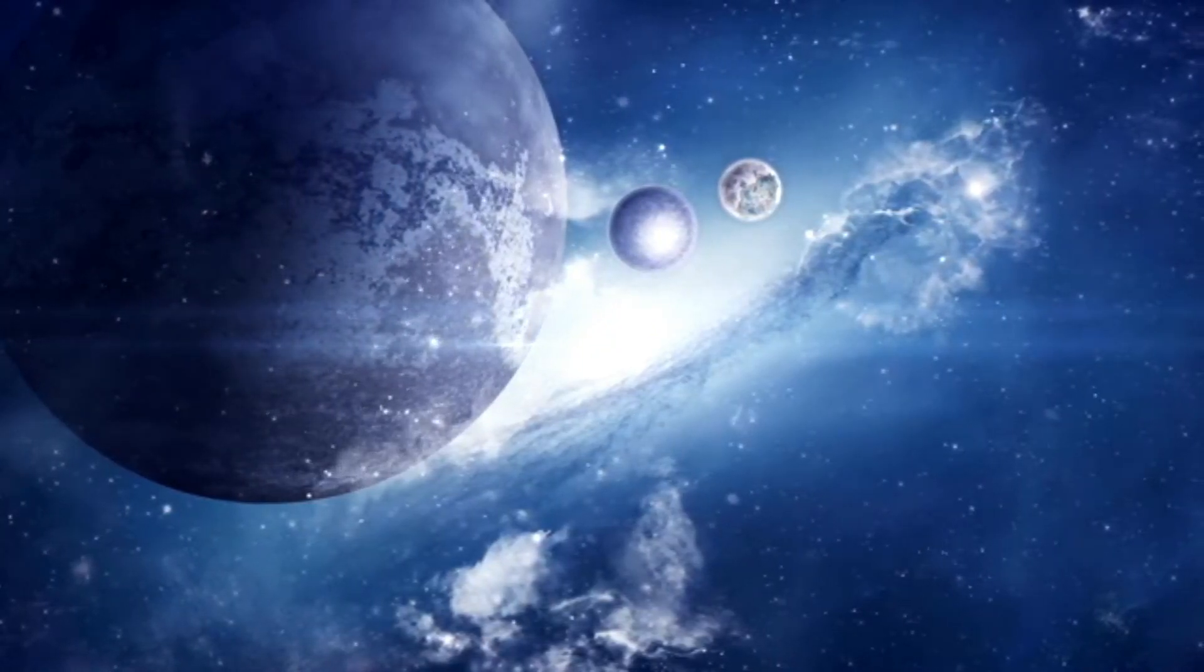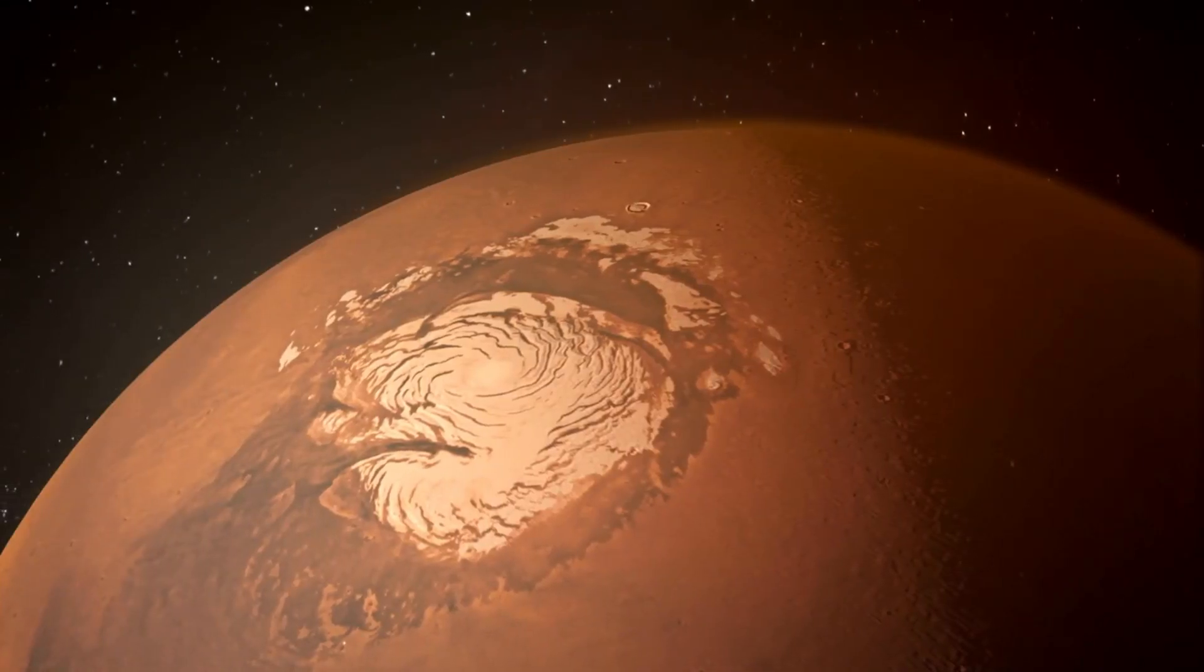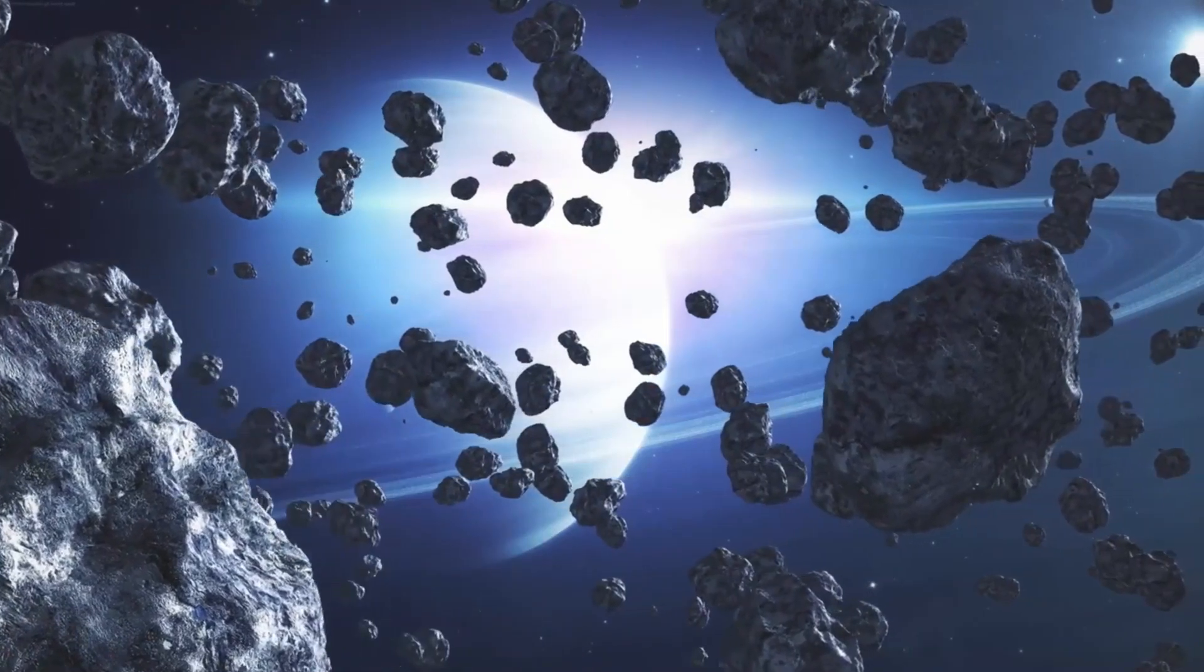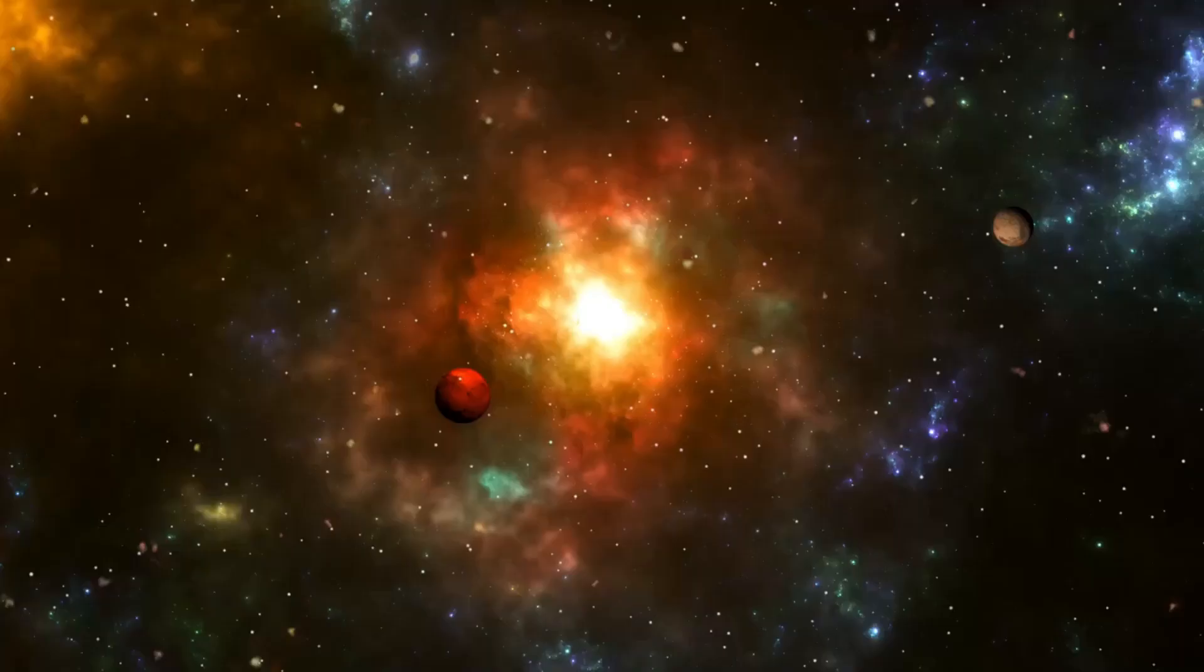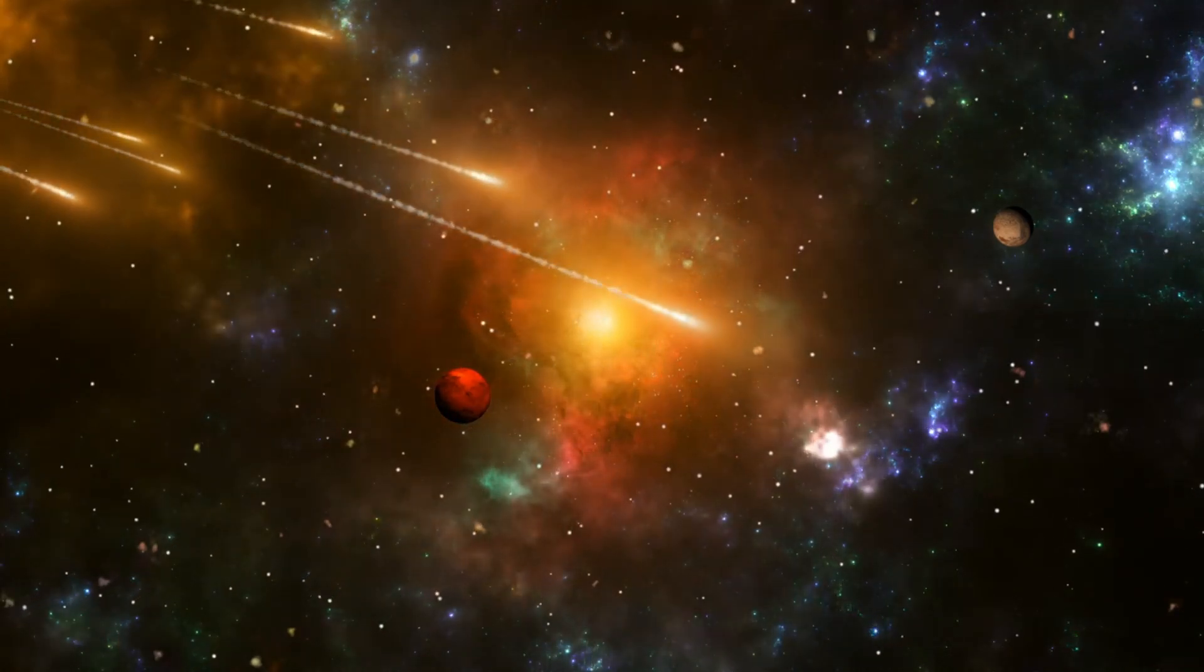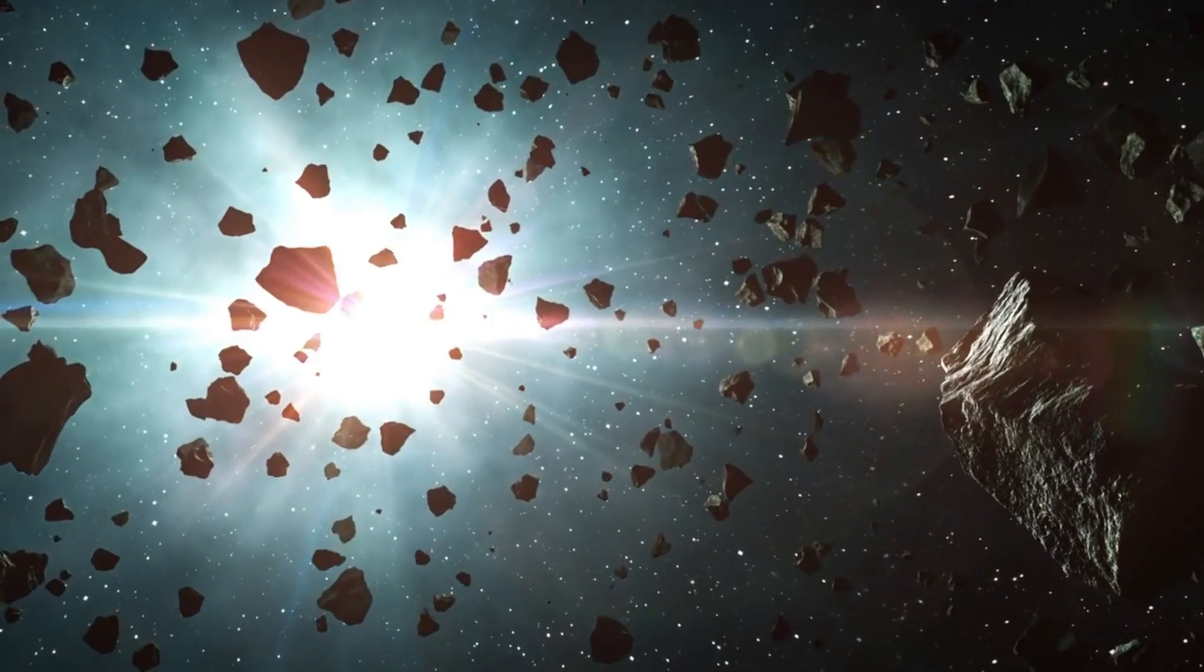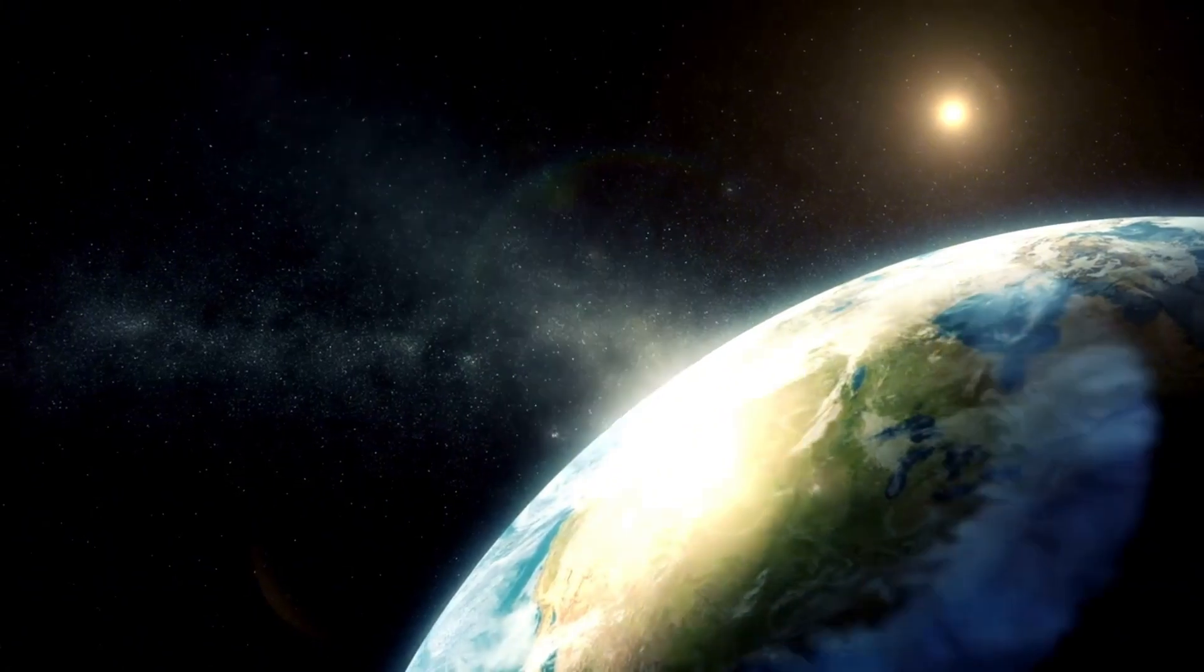The New Horizons mission, which flew by Pluto in July 2015, gave unprecedented data about this distant world. The surface of Pluto is characterized by enormous plains, transcending mountains, and profound valleys. One of the most eminent features is the Sputnik Planitia, a huge heart-shaped plain that is principally made out of nitrogen ice. This region features a diverse array of land highlights, including massive ice sheets and what appear to be flowing glaciers. The presence of these elements demonstrates that Pluto may be geologically active, regardless of its great distance from the sun and low temperatures.